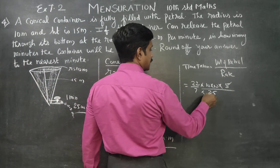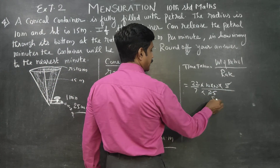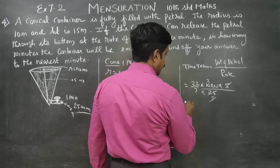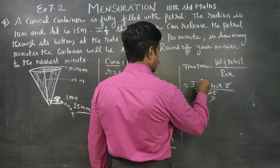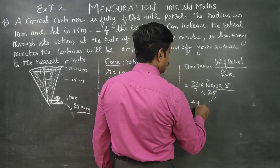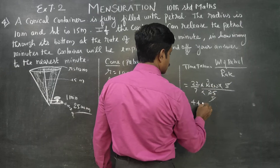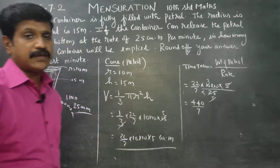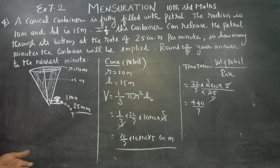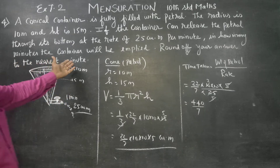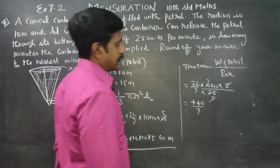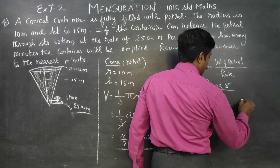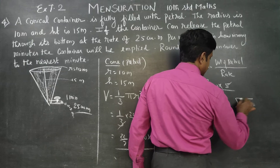Cancelling: 5 goes into 5 once, and 5 goes into 25 five times. After cancellation, we get 44 × 10 divided by 7, which is 440 by 7. Dividing the petrol volume by rate gives us how to convert to the nearest minute: 440 divided by 7.